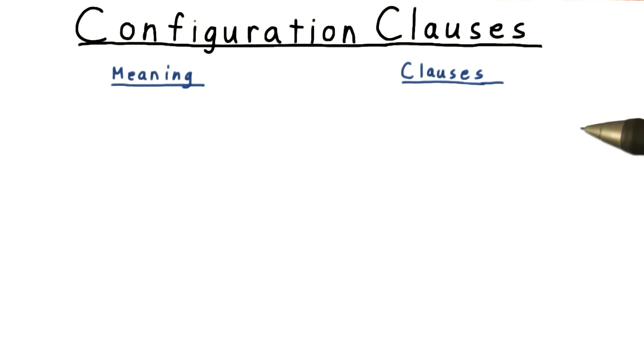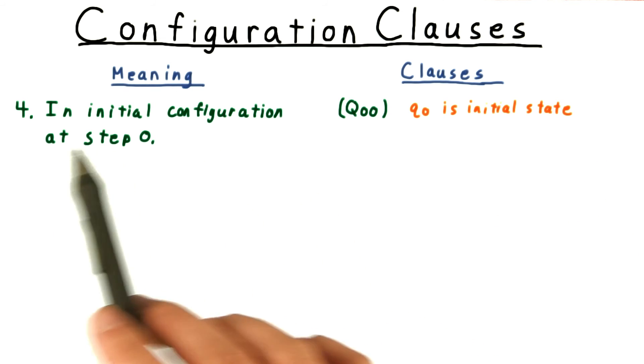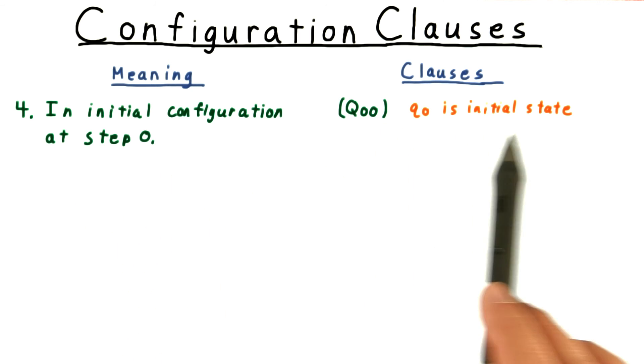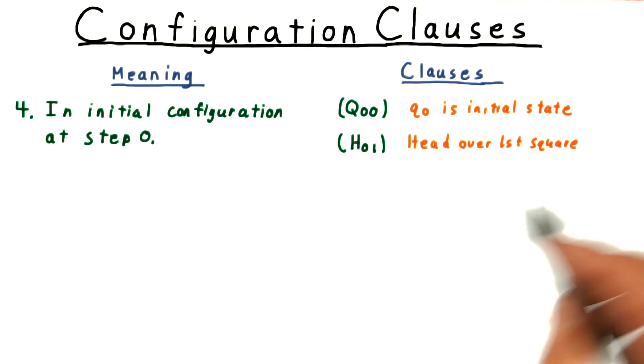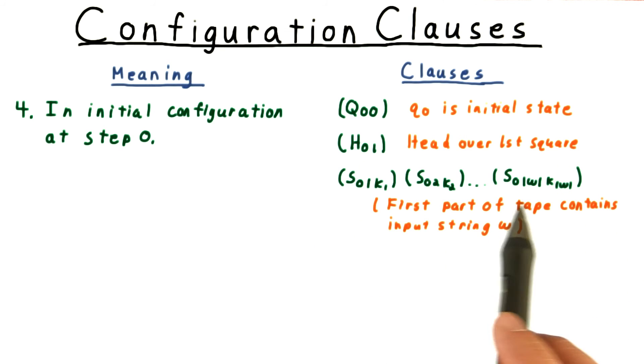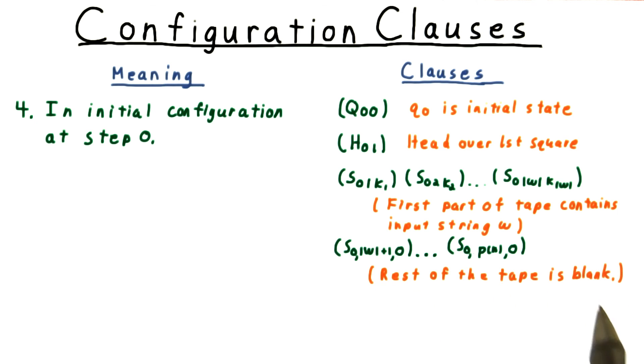The other clauses related to individual configurations come from the start and end states. The machine must be in the initial configuration at step zero. This means that the initial state must be q0, that the head be over the first position on the tape, and that the first part of the tape contained input w. The rest of the tape must be set to blank to start.